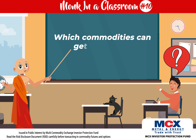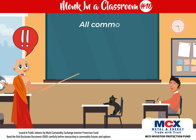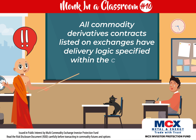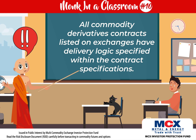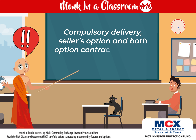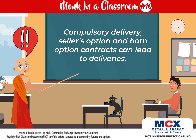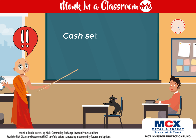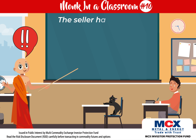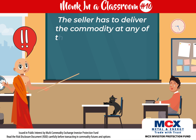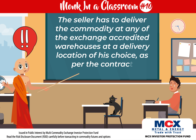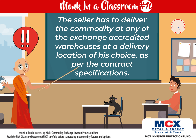Which commodities can get delivered? All commodity derivatives contracts listed on exchanges have delivery logic specified within the contract specifications. Compulsory delivery, seller option, and both-option contracts can lead to deliveries. Cash-settled futures contracts cannot be delivered. The seller has to deliver the commodity at any of the exchange-accredited warehouses at a delivery location of his choice, as per the contract specifications.